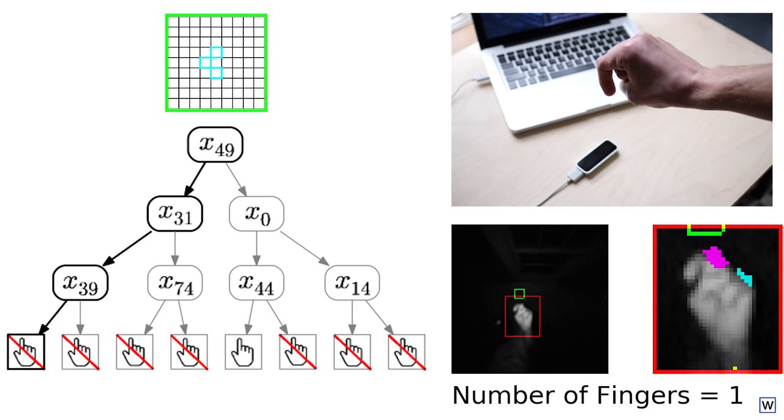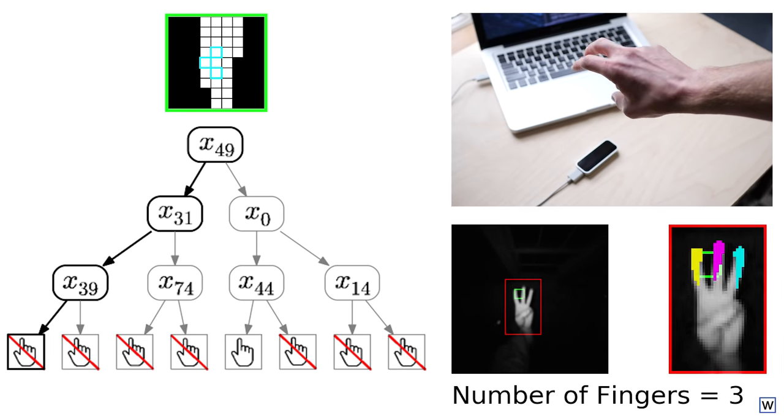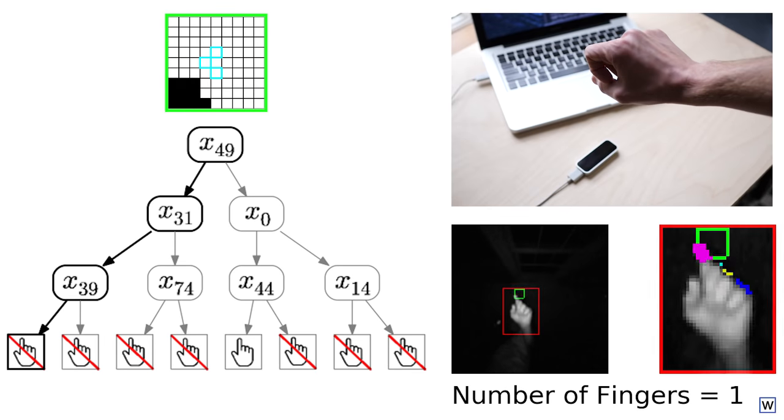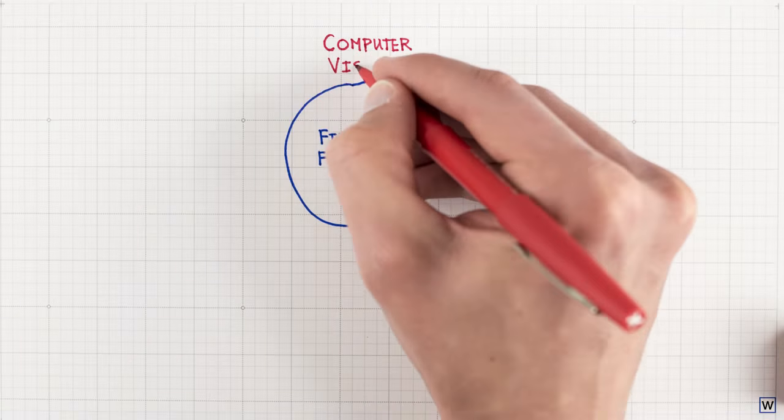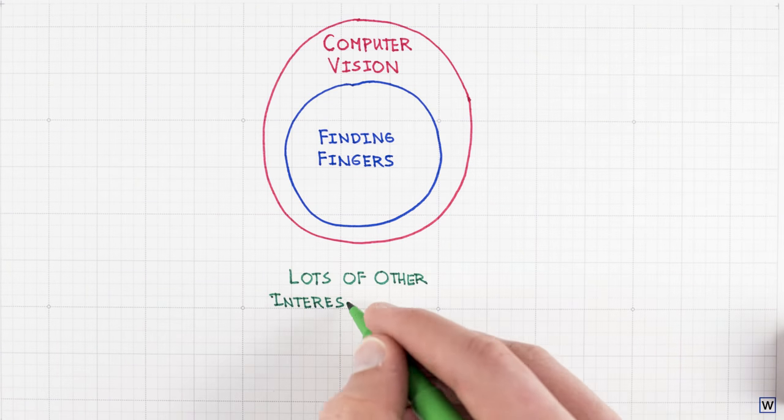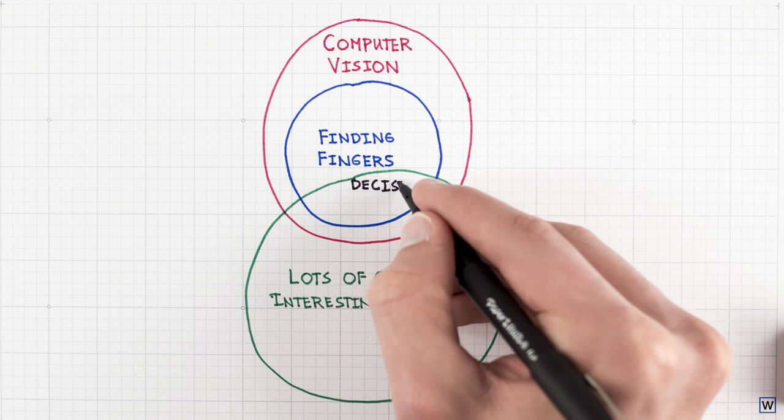A lot has changed in the 50 years since Minsky and Sussman set out to solve problems like this. One particularly interesting shift is the discovery that many of the things that make our problem hard also make lots and lots of other interesting problems hard too.